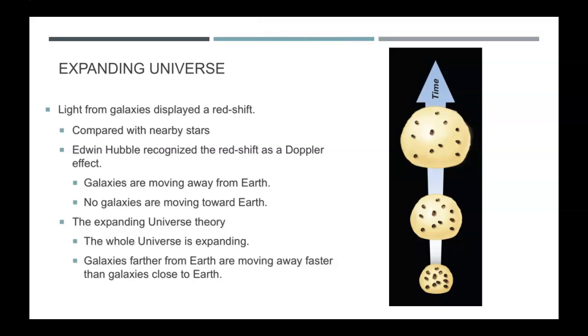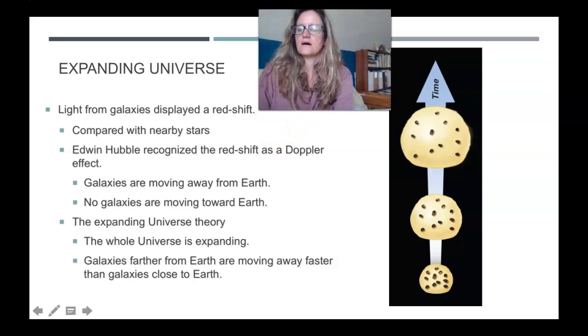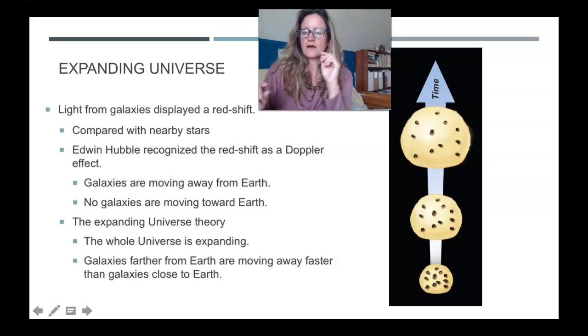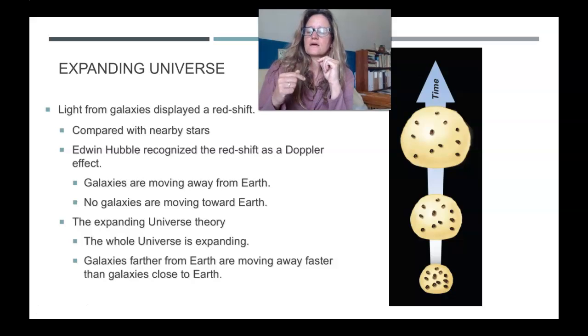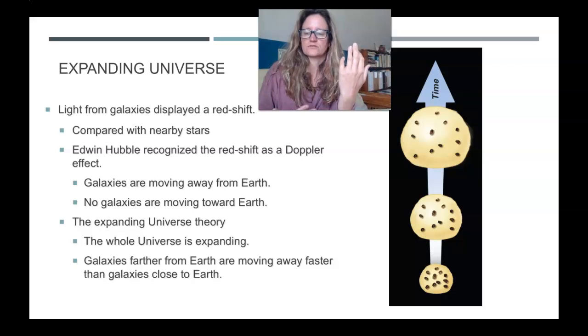So they were all moving away from each other. So every object in the universe was moving away from all other objects. Hubble discovered that in the 20s. So he came up with then this expanding universe theory that the whole universe was expanding.